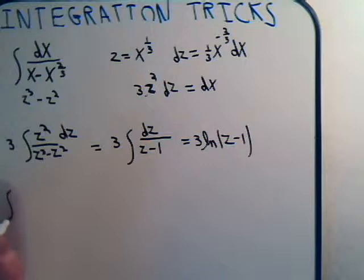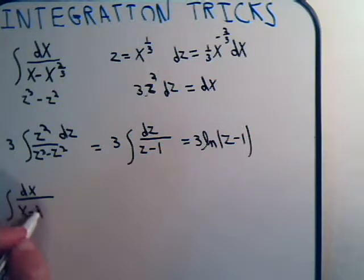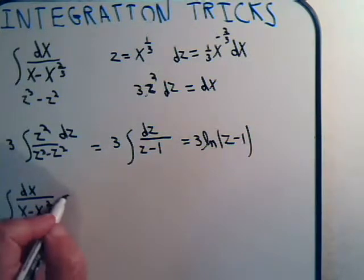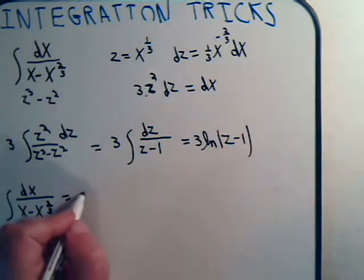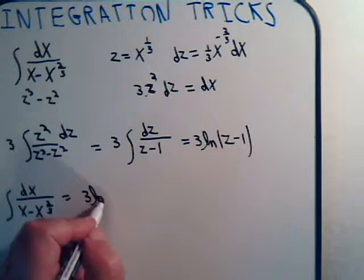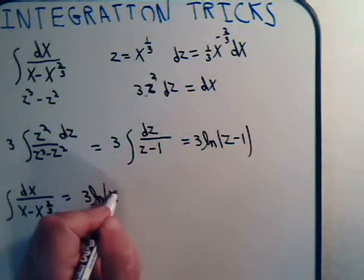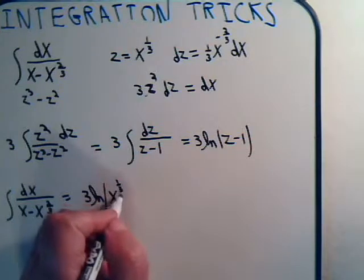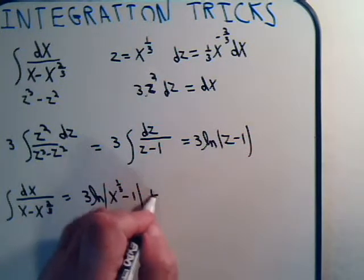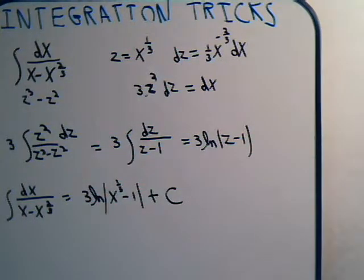So we're going to say the integral of dx divided by x minus x to the two-thirds equals 3 times the natural log of x to the one-third minus 1 plus an arbitrary constant.